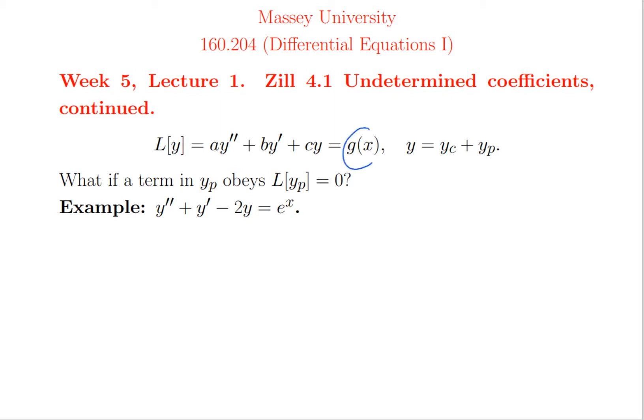The right hand side has a function of x only — that's the inhomogeneous term. We have seen that the general solution is the sum of two terms: the complementary solution yc, which is the general solution to the homogeneous equation L(yc) = 0, and yp, the particular solution, which is just any solution to the inhomogeneous equation. Once determined, yp will be one particular function of x with no arbitrary coefficients.